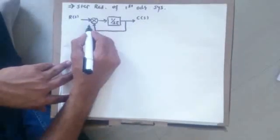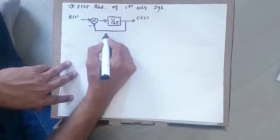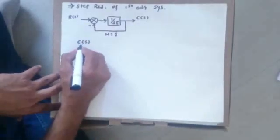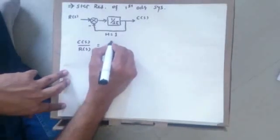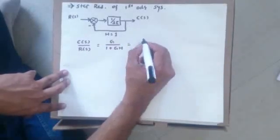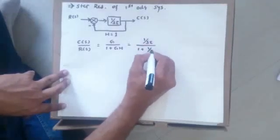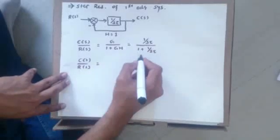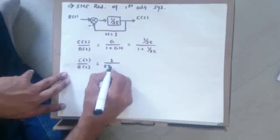Now I know how to find out the transfer function. It is C upon R equal to G upon (1 plus G·H), and H is equal to 1 here. So I can say that C upon R is equal to (1/s·tau) divided by (1 plus 1/s·tau). Let us simplify this. Taking s·tau as the LCM, I will have 1 divided by (s·tau plus 1).